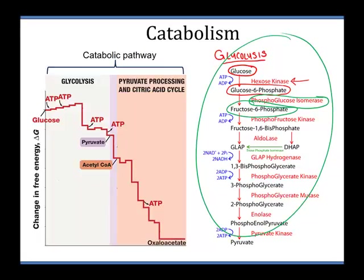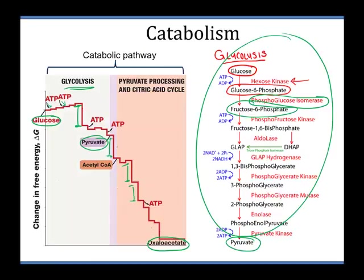This whole pathway on the right is represented in terms of its energy in the graph on the left. We start with glucose in the very beginning, and we end with pyruvate in glycolysis. Cell respiration doesn't end with glycolysis — we keep going all the way down to oxaloacetate. During glycolysis, we actually have to put a little bit of energy in first. This catabolic pathway, at first, requires a little bit of energy, and that's normal — we've got to put some energy in to kick it started. Then we get a big drop, releasing a lot of energy out, and another drop, and another drop.